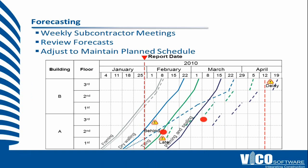This data record of start and finish dates gets plotted into the flowline view — the location-based schedule view of the trades. We can see that the solid line was our original plan and the dotted line is our progress to date, with this being our report date. The framing guy wasn't too bad — he started slightly late but kept on production and is going to finish just slightly late without affecting anybody else.